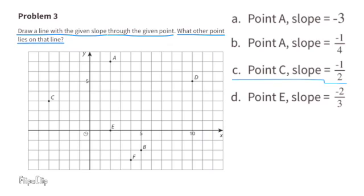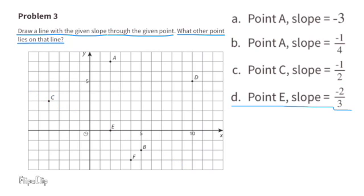C: Point C, slope equals negative 1 over 2, or negative 1 half. First, I need to find point C, then I need to go down 1 unit and to the right 2 units. I can continue that until I find the other point on the line. Here I can see that point E is also on the line, and here's a look at the line with a slope of negative 1 half. D: Point E, slope equals negative 2 over 3. That means the rise will go 2 units down and the run will be 3 units to the right. You can see that point B is also on this line. Here's a look at the line with a negative 2 thirds slope.